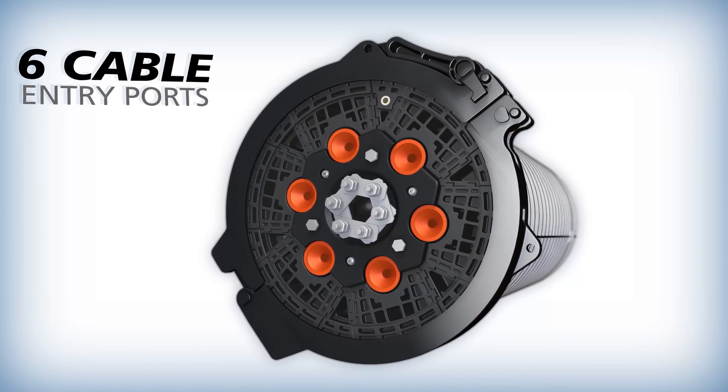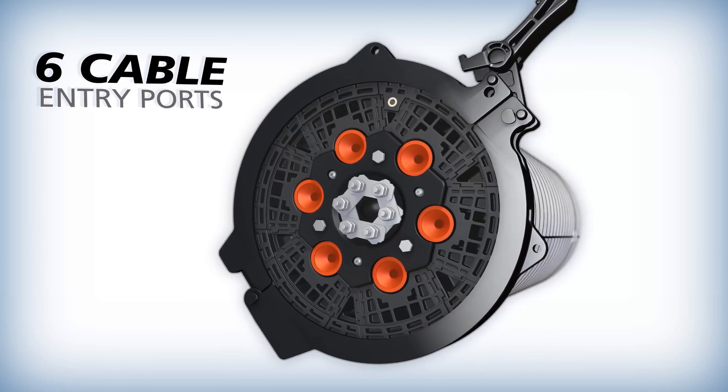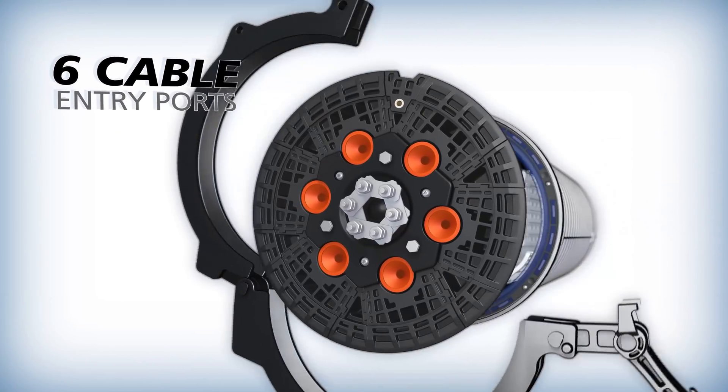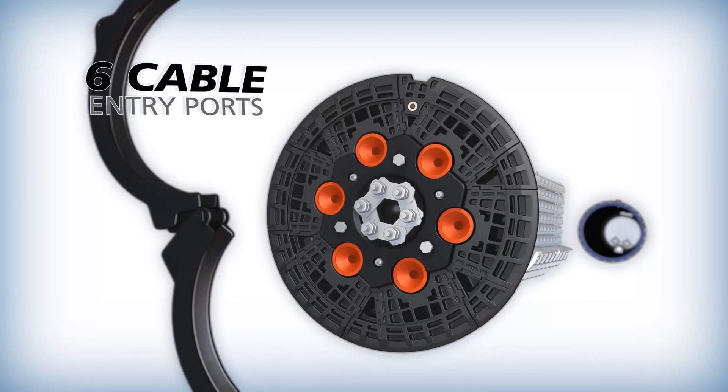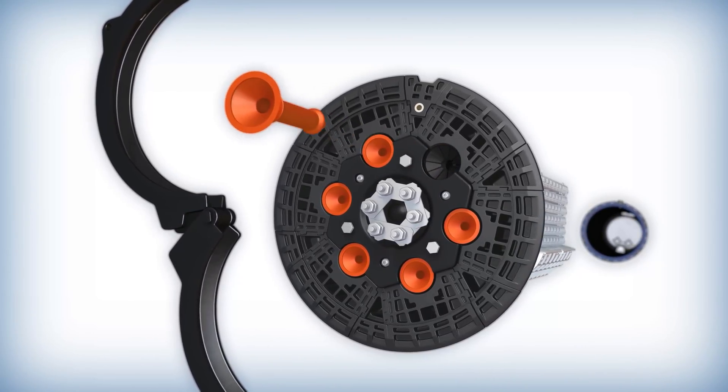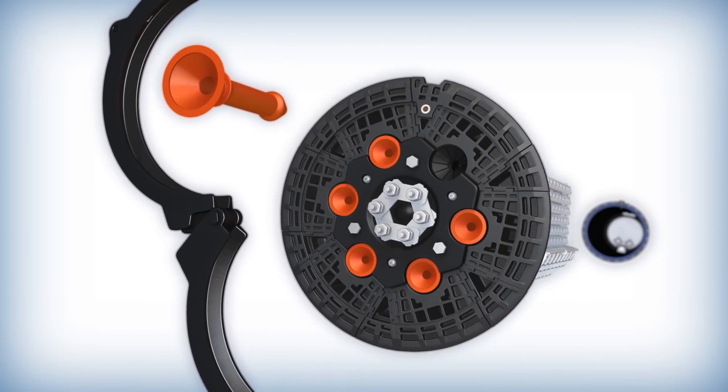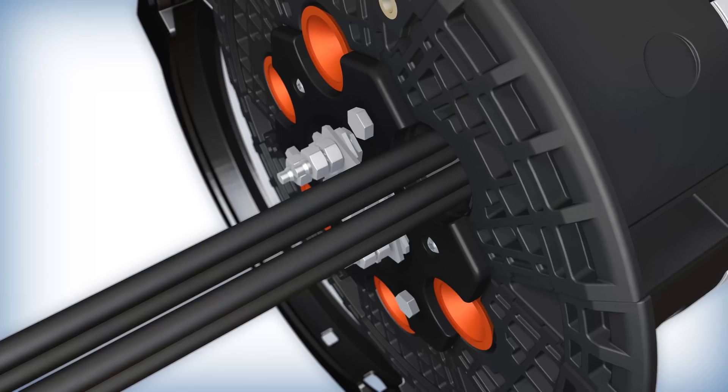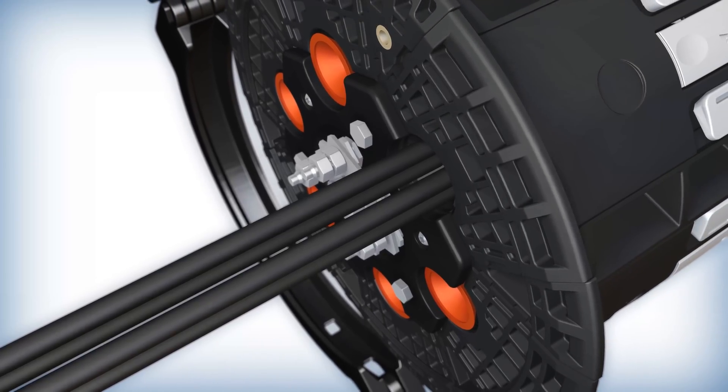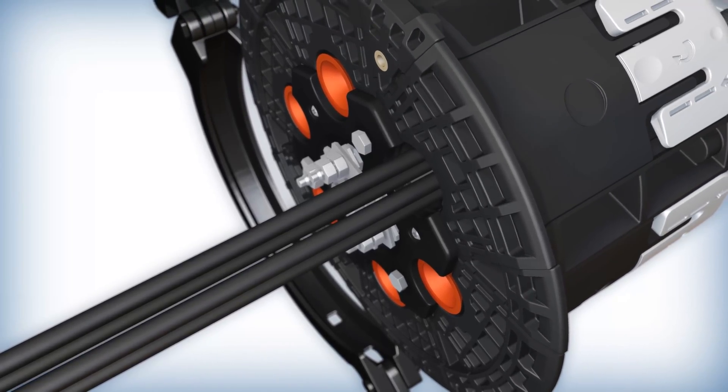To maximize fiber density, the Apex X2 and Apex X2S are each designed with six cable entry ports. Each one is supplied with a pre-installed plug to be removed prior to cable installation. Each port accepts a single cable or four drop or micro cables with the use of the multi-port sealing kit.